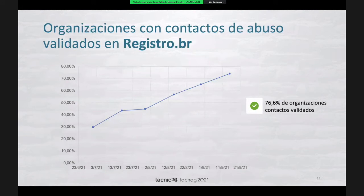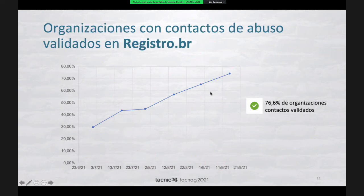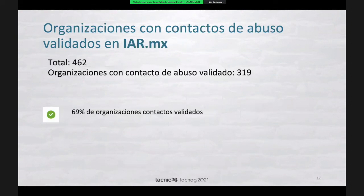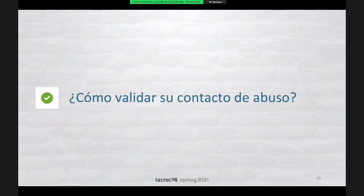Regarding policy implementation, this is done both at LACNIC level and also at the level of the other NIRs. This is information provided by the BR registry. Here we see the performance — they show the validated abuse contacts, the number has increased, and at present they have almost 77,000 organizations with validated contacts. In NIC Mexico, they have also reached 69% of organizations that have validated their contacts. So, although there is work to be done, more than half have already validated their abuse contact.